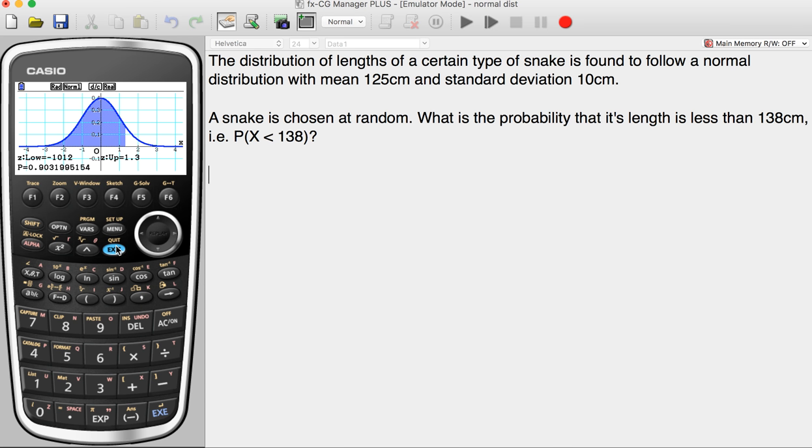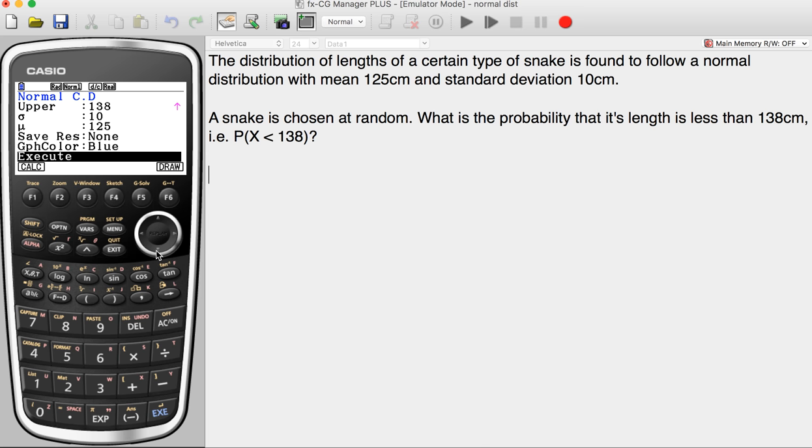So let's go back out of this and actually do the calculation. There you go, p equals 0.90319 and that's actually 90%.